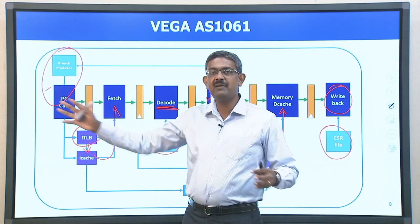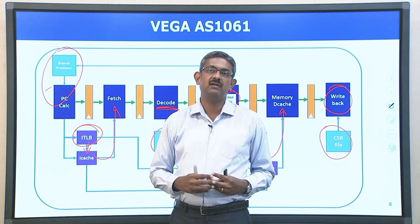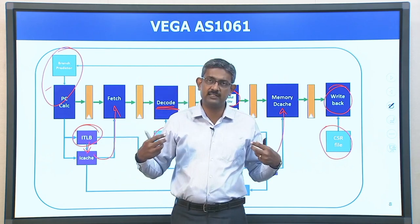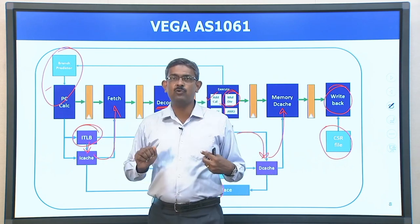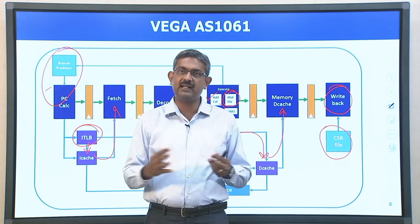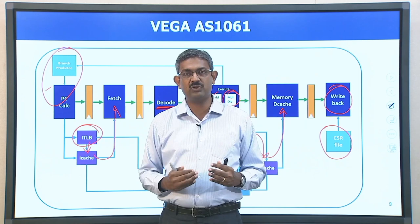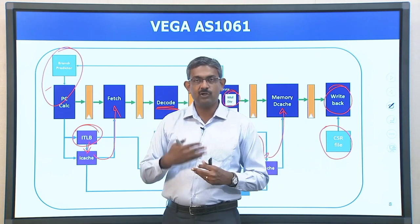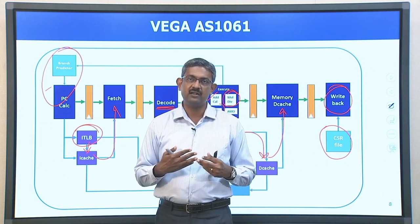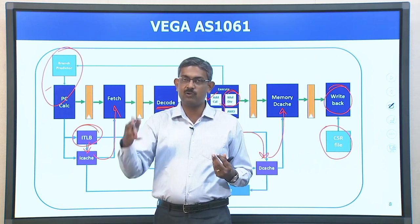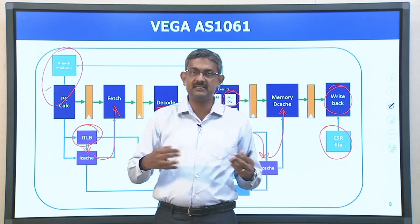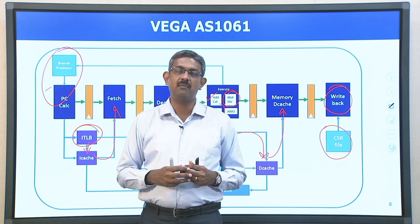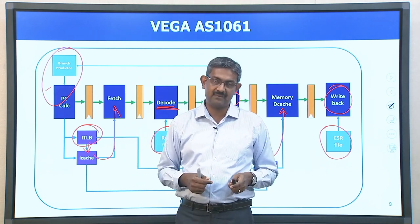When you look at this pipeline it is more or less the same as the traditional RISC pipeline — the basic 5-stage RISC pipeline. This also forms a load-store architecture. It has a PC calculation directly linked to the branch predictor, followed by TLBs which convert virtual addresses to physical addresses. You access the I-cache for fetching, then decode, then go to the execution stage where for load/store instructions you calculate the address, perform tasks in the ALU for other operations, then the MEM stage, followed by the write-back stage.